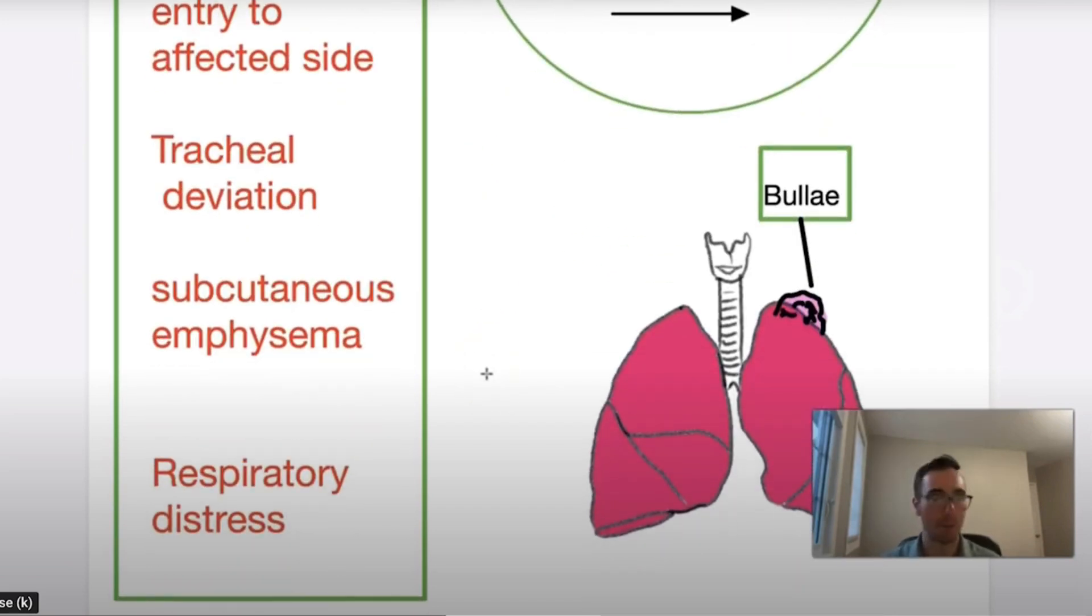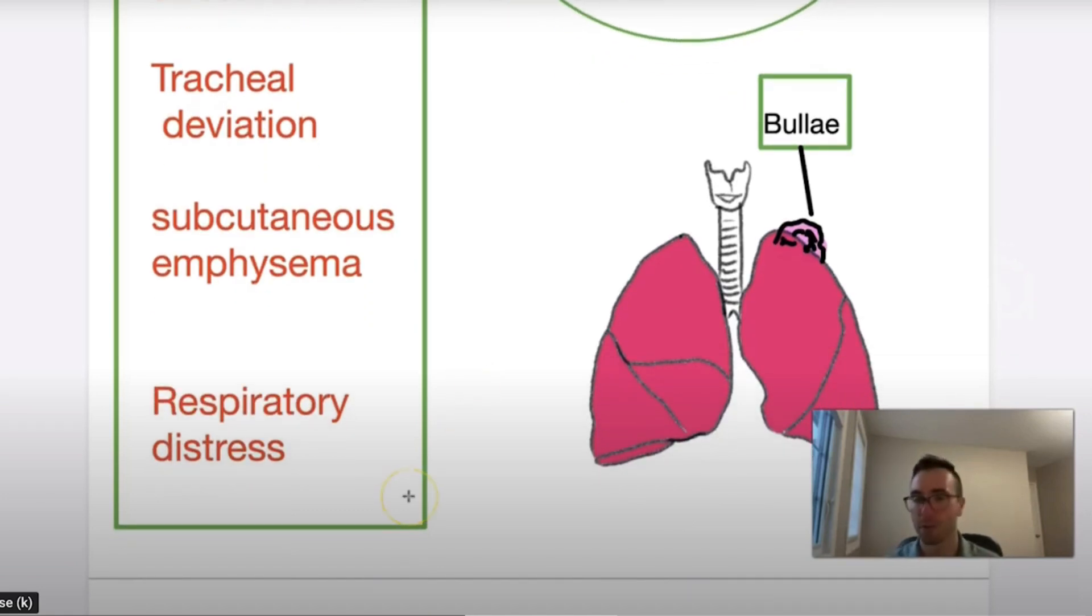Then you get the subcutaneous emphysema. I don't know if many people have felt this. You have to be quite methodical and diligent in finding it because it just means air is trapped under the subcutaneous spaces, usually from a tension pneumothorax. And it feels like that crackling sound. So again, you have to be very methodical to do it.